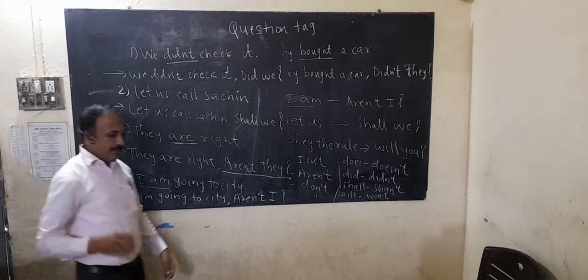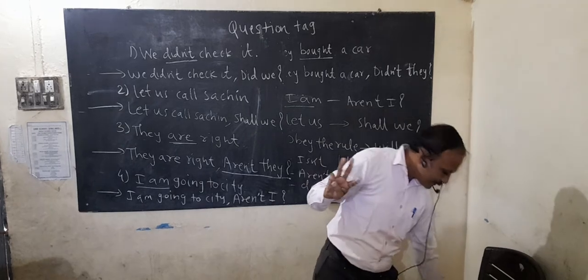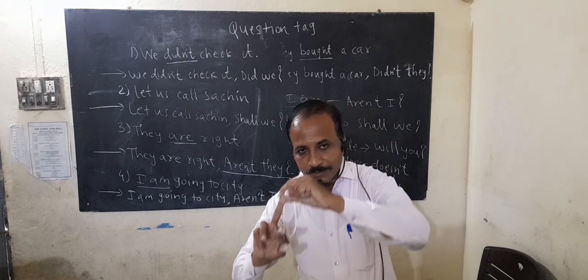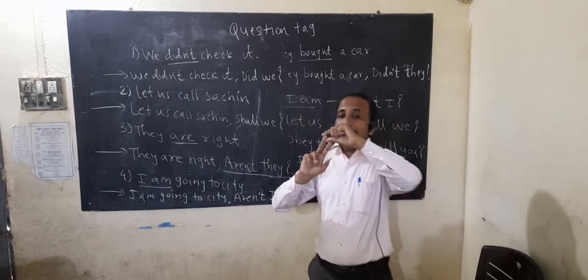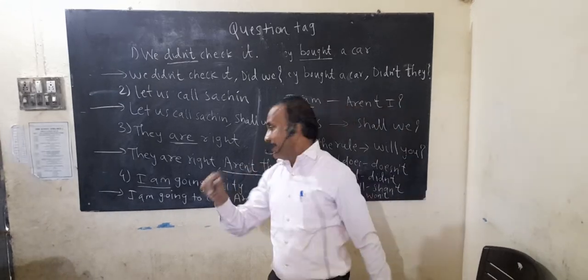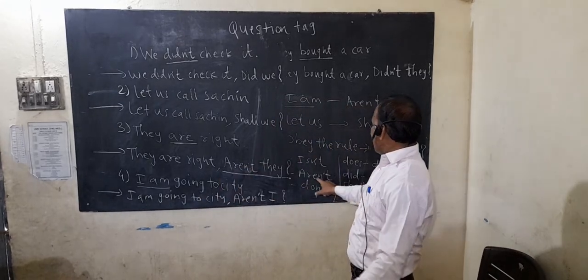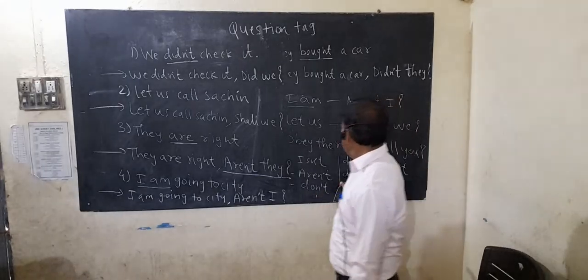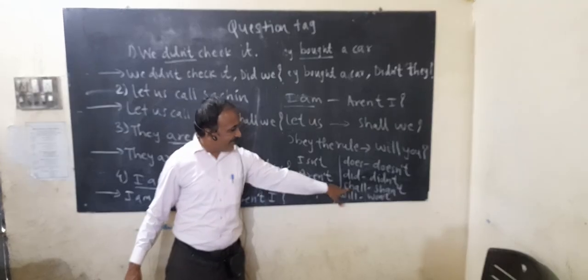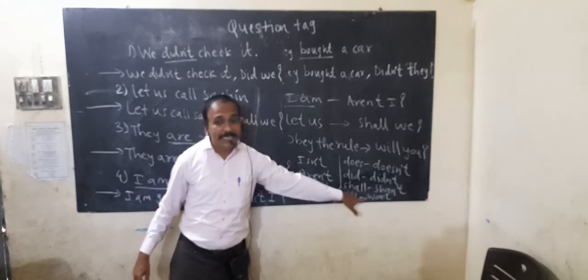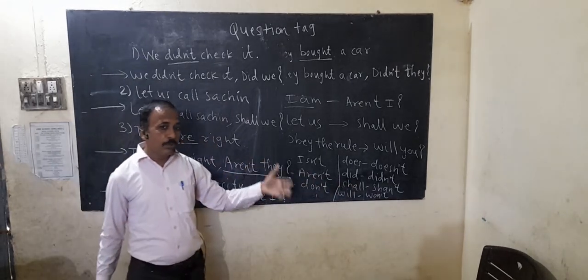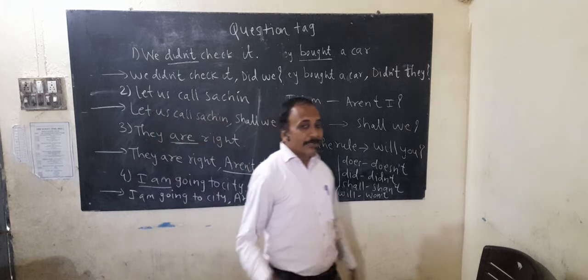So my dear friends, remember three things: first, if the statement is positive, the question tag comes negative. Second, the helping verb becomes a short form — 'is' becomes 'isn't', 'are' becomes 'aren't', 'do' becomes 'don't', 'does' becomes 'doesn't', 'did' becomes 'didn't', 'shall' becomes 'shan't', 'will' becomes 'won't'.